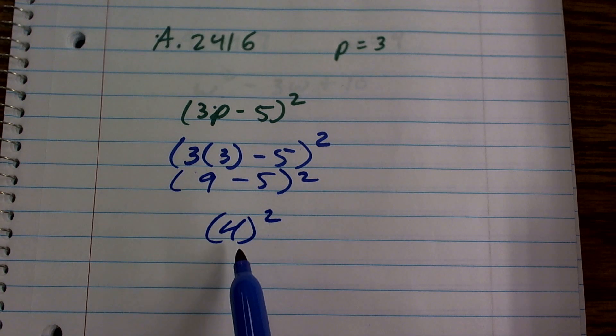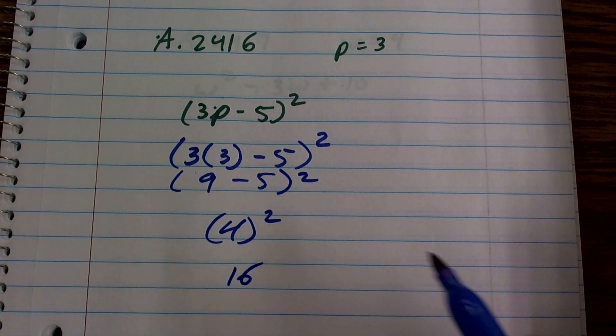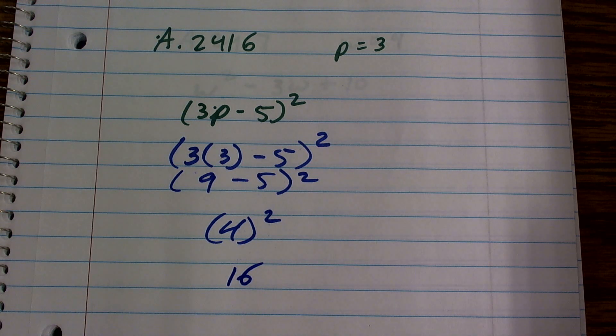Now I just follow up. My last operation is 4 squared, which is 16. And there you go. End of process.